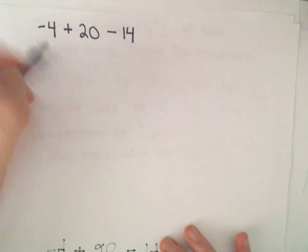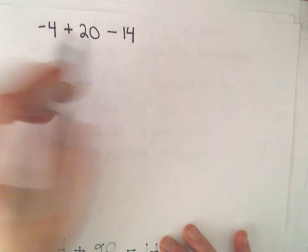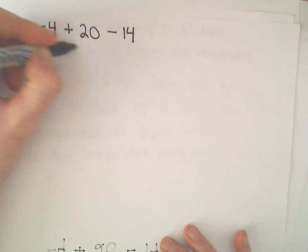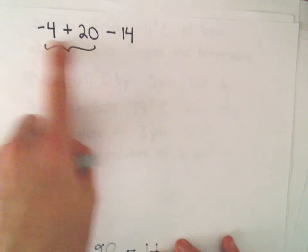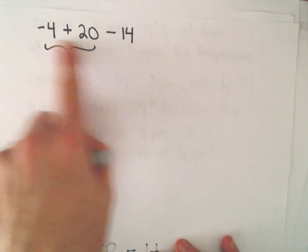So what I'm going to do here, we've got negative 4 plus 20 minus 14. I'm just going to combine my first two numbers here, negative 4 and positive 20. And again, these are opposite signs.